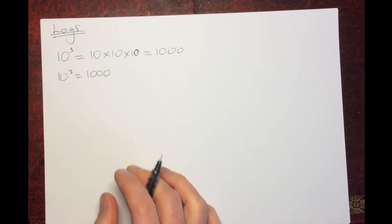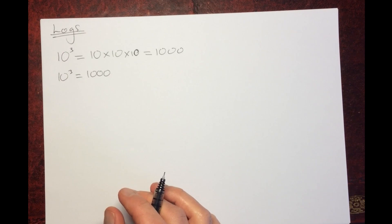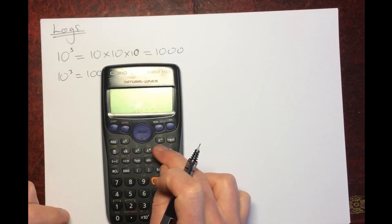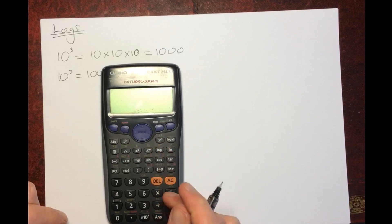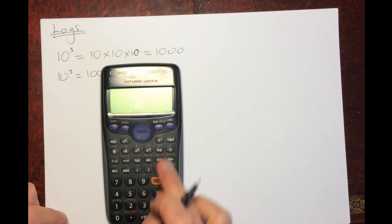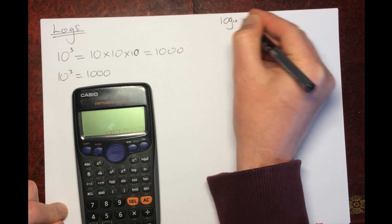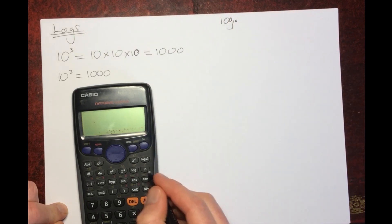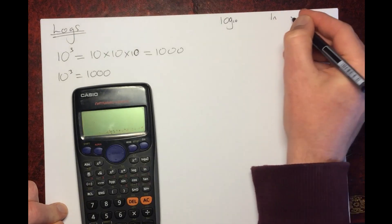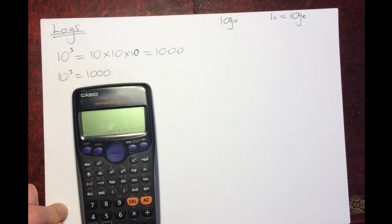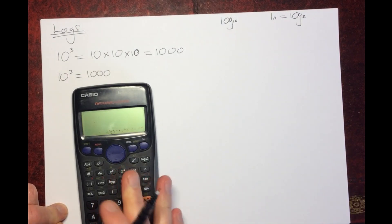You'll find logs on your calculator. There are two buttons: the log button and the ln button. These are both logs. The log button means log to the base 10, and the ln button — we call that the natural log — means log to the base e. So there are two different logs here.